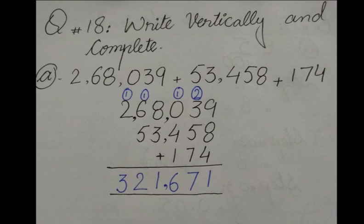Question 18: Write vertically and complete. We have to write the values vertically. The question is 2,68,039 plus 53,458 plus 174. This is written horizontally. We need to write it vertically. Start from the right side: 2,68,039 first, then 53,458 second, and 174 third.